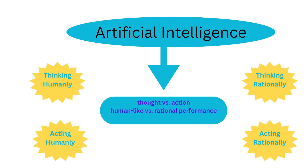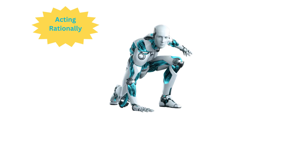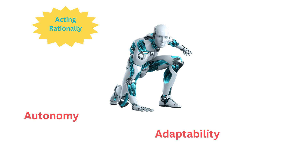The fourth pillar, acting rationally, encompasses the design of agents that act to achieve the best possible outcome based on their knowledge of the world. These rational agents are characterized by their autonomy, adaptability, and goal-directed behavior.